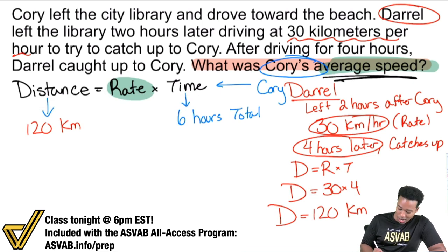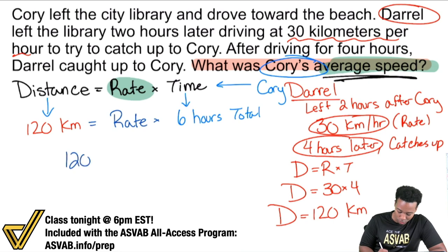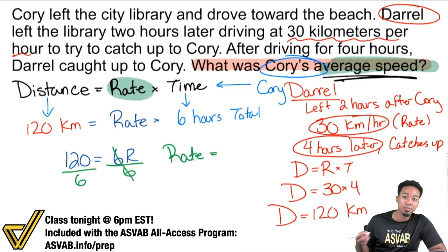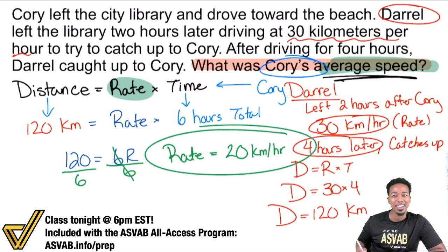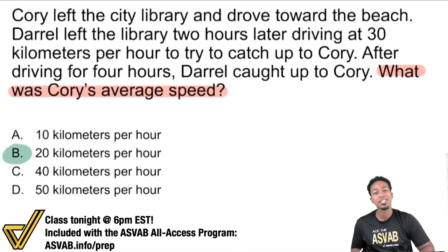That's the same distance for Corey. So we can now fill this in: 120 equals rate times six hours total. We can rewrite this as 120 equals 6R, and we divide both sides by six. The rate for Corey will be 120 divided by 6 — that's going to give us 20 kilometers per hour. So we come back up here — the answer will be B.